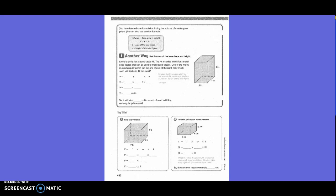Another way, use the area of the base shape and height. Amelia's family has a sandcastle kit. The kit includes molds for several solid figures that can be used to make sandcastles. One of the molds is a rectangular prism. How much sand will it take to fill the mold? Basically they said the volume equals the base area, so that's the length times the width. The length is 5, the width is 4, and the height is 8. So 5 times 4 is 20. 20 times 8 is 160 cubic inches. So it will take 160 cubic inches of sand to fill the rectangular prism mold.